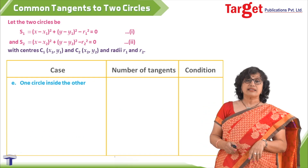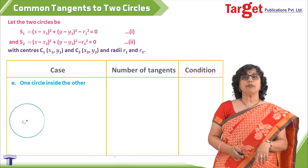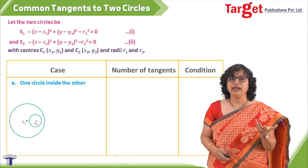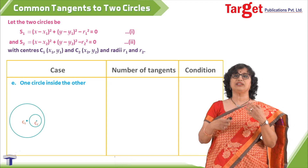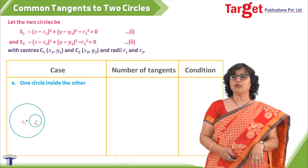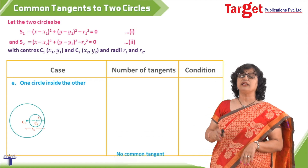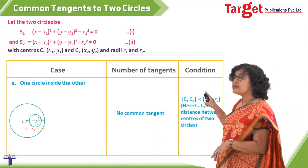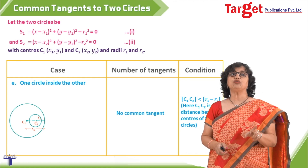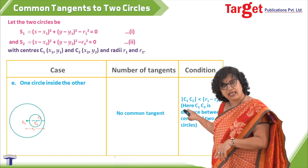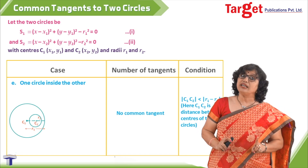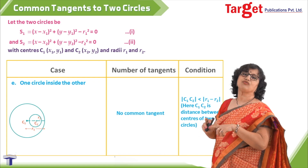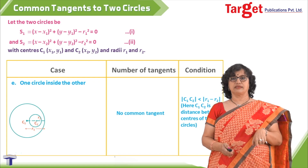The next case is one circle inside the other. There is no possibility of drawing any type of tangent — whether transverse or direct — so there is no common tangent here. The condition is that distance c1c2 is smaller than the absolute value of r1 minus r2, where c1c2 denotes the distance between the centers.